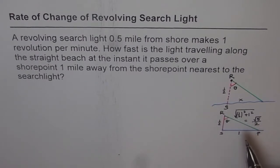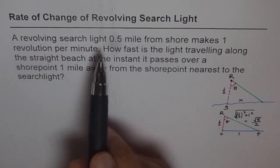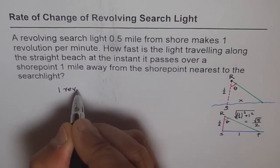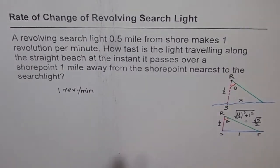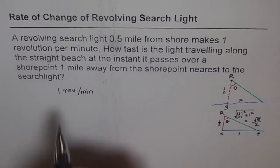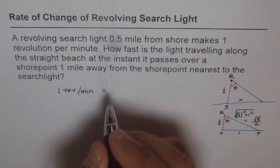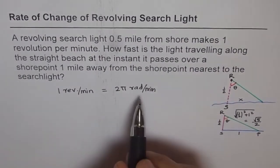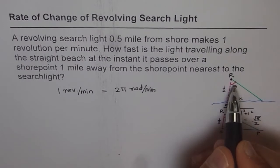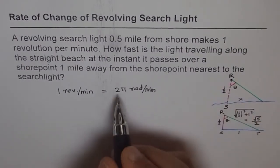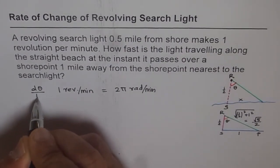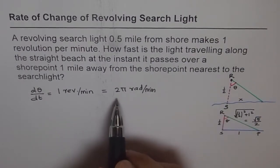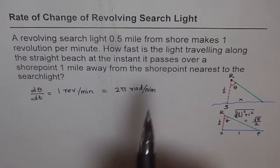Given: a revolving searchlight makes one revolution per minute. In trigonometry, you always convert units to radians. One full revolution equals 2π radians, so this is 2π radians per minute. Since the light is revolving, it produces a change in angle with time — therefore dθ/dt = 2π radians per minute.